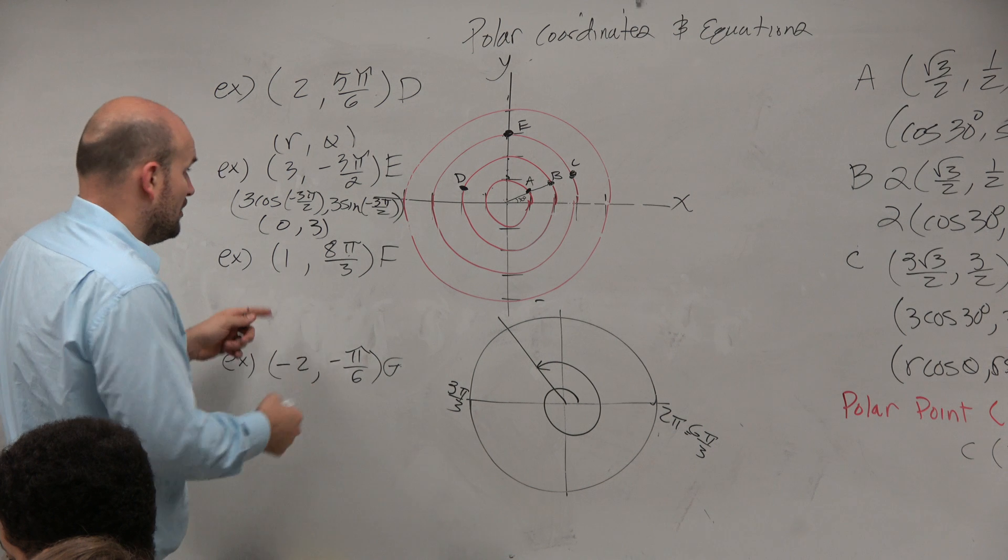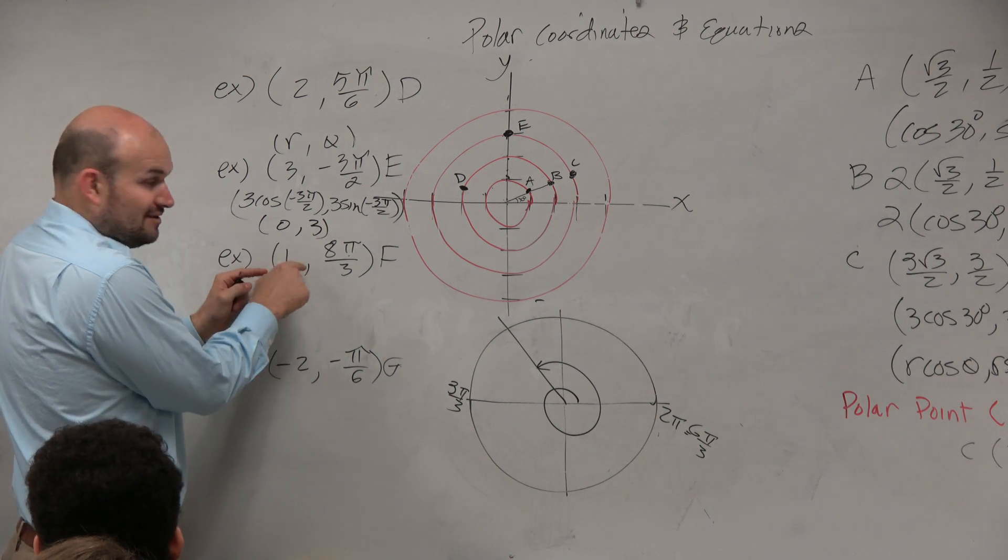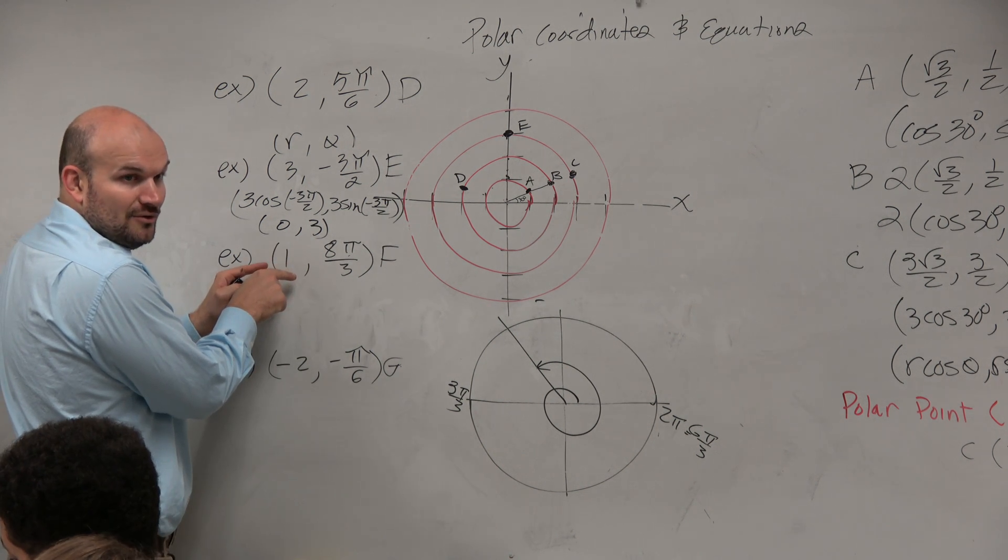But the difference here, oh, actually, this one is on the unit circle. Look at that, because the radius is 1. That's kind of cool.